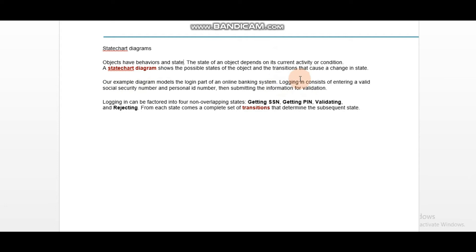In logging in, we have to enter a valid social security number, enter a personal ID number, and then submit for validation. We factor in four non-overlapping states: getting the social security number (SSN), getting the personal ID number (PIN), validating, and rejecting.